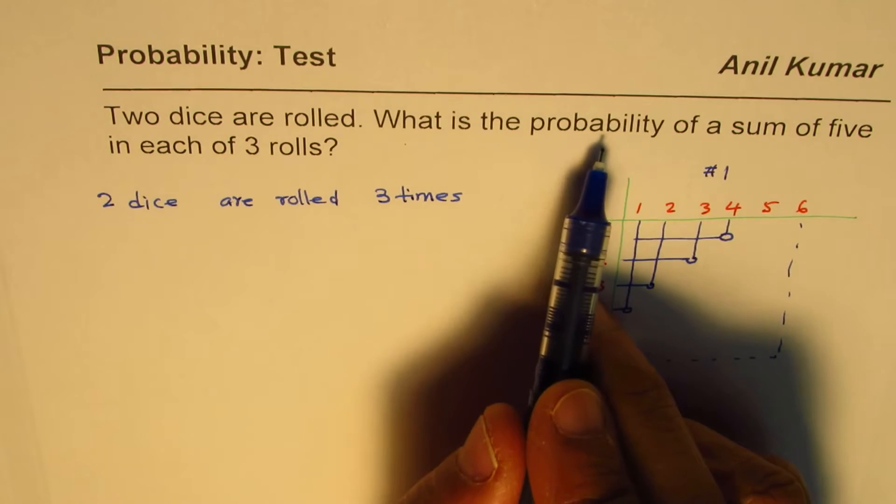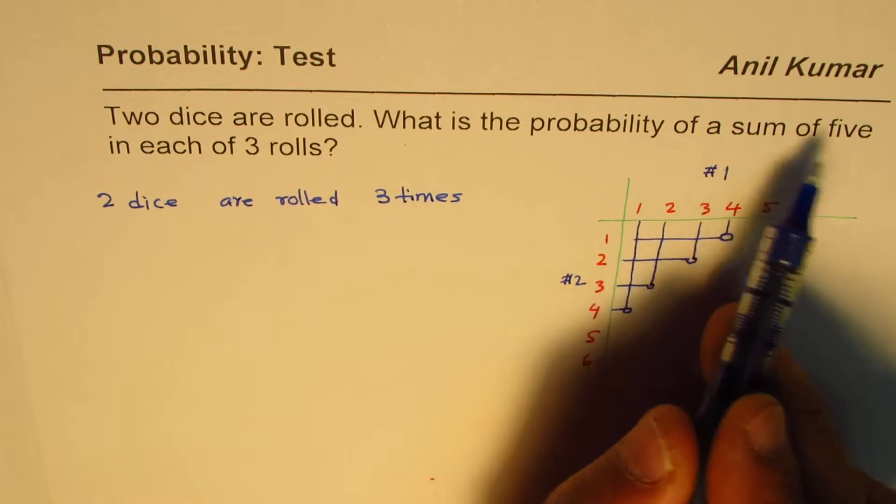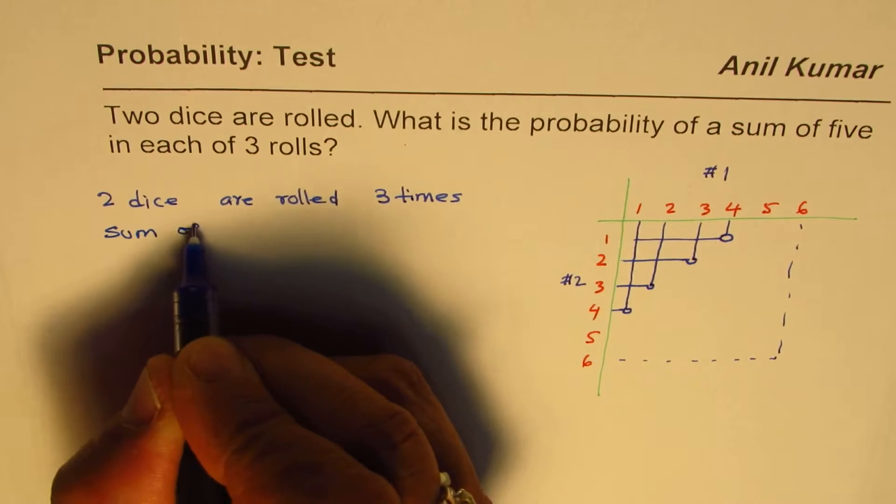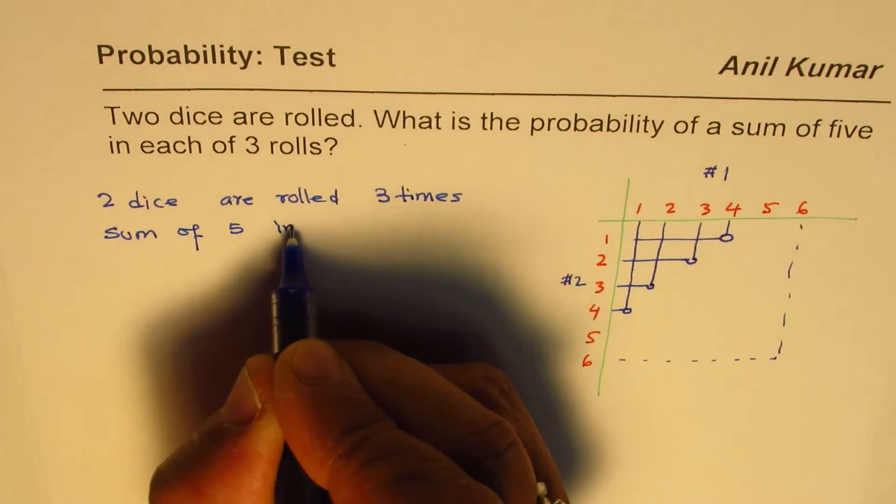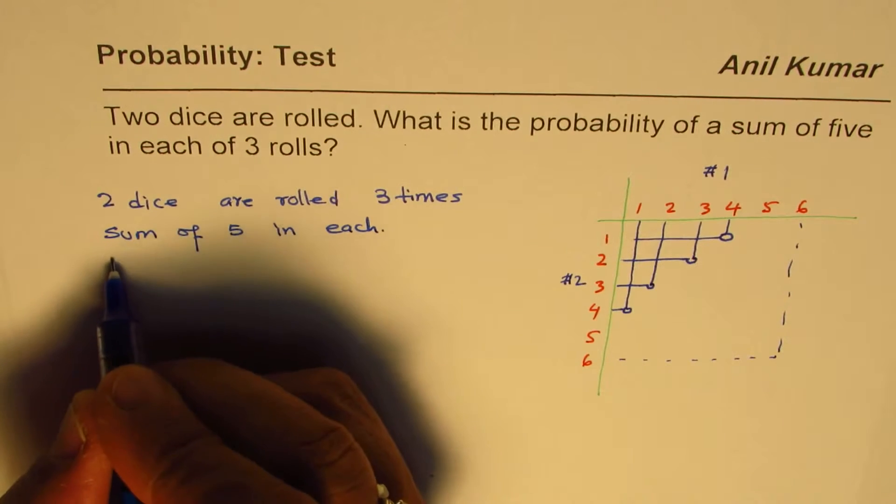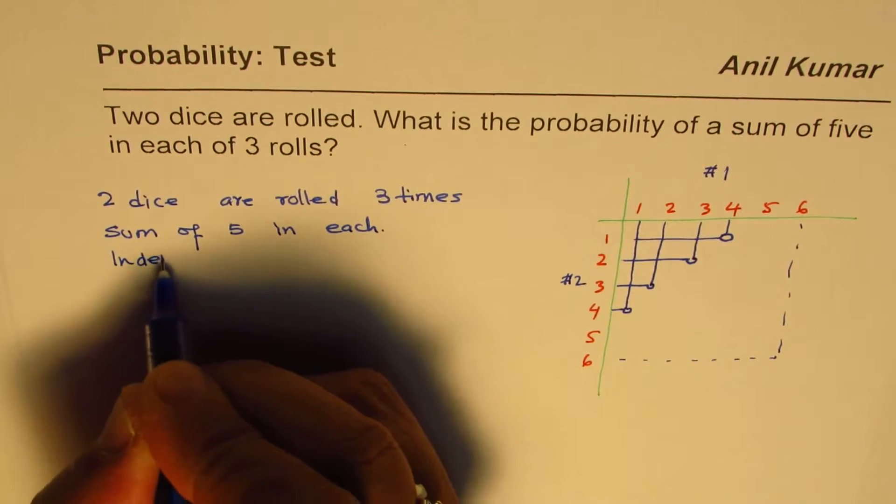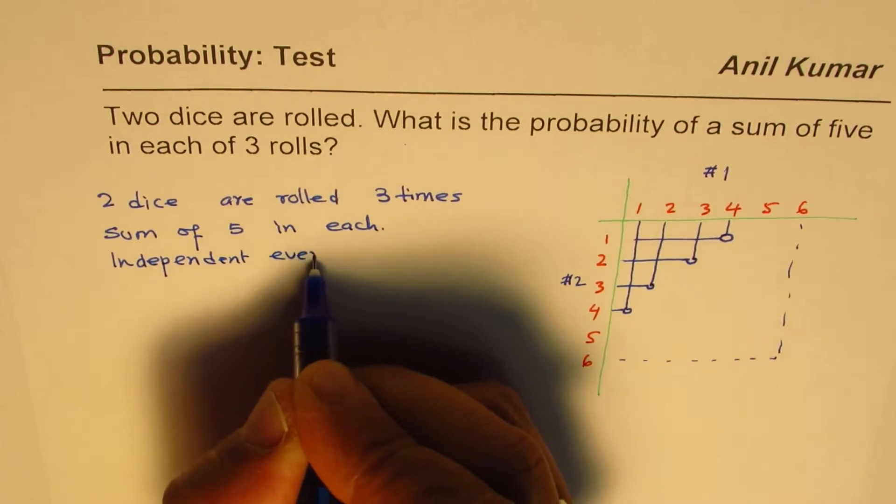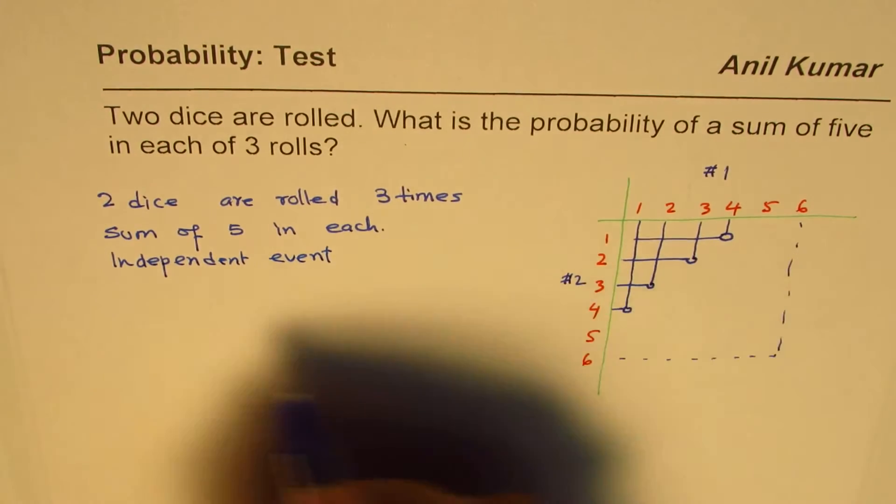What is the probability of sum of five in each? We want sum of five in each. You can clearly see this is kind of an independent event. It is an independent event.